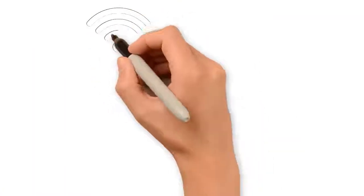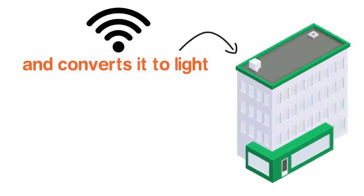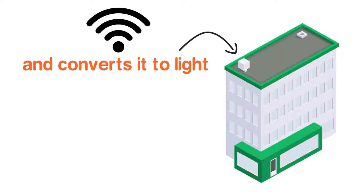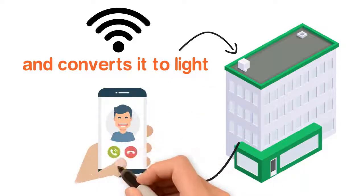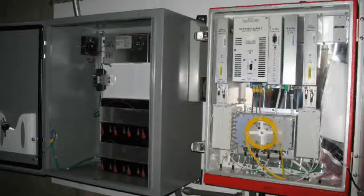The system takes the source's wireless signal and converts it to light. Then it distributes it throughout the building using fiber optic cable. At strategic locations, the remote unit changes the light back to RF so your phone can receive it.